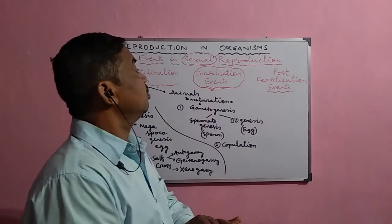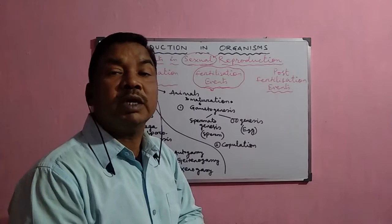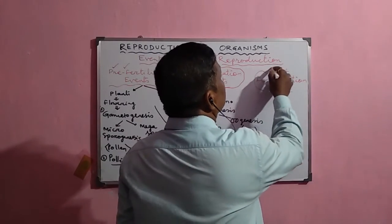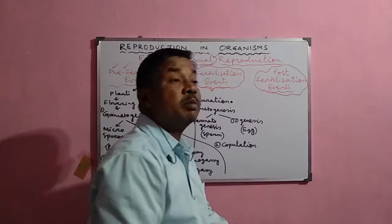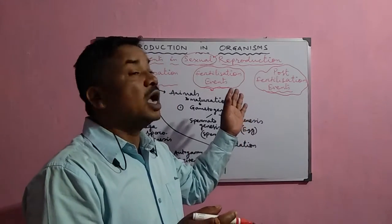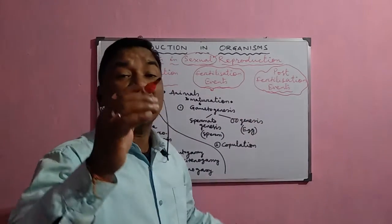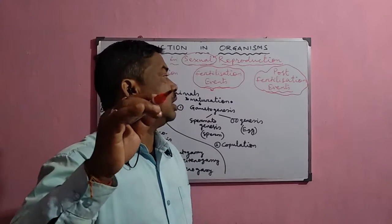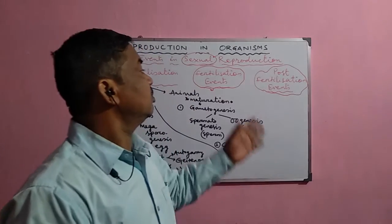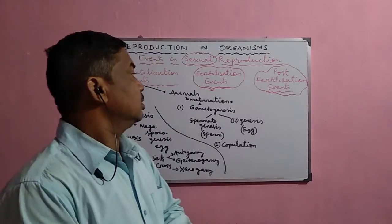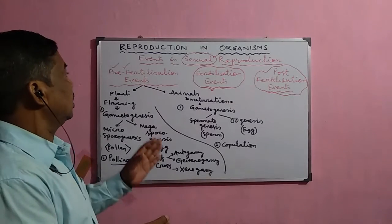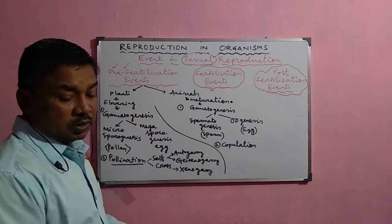The next phase is fertilization, or the fusion of the male and female gamete. And the third is the post-fertilization event — what changes occur in the zygote, how it develops into the embryo, and how the embryo later develops into the new plant. Now we shall start from the first one, the pre-fertilization event.